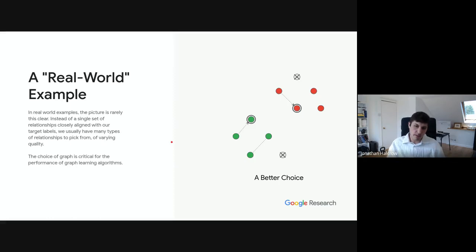A bad choice of graph gives us a poorly performing graph learning algorithm. On the other hand, a better choice might be to choose the dotted lines from the previous picture. And instead, we make these two decisions correctly, but we're unable to make any inferences about these other nodes. And so you can see the choice of graph is critical for the performance of any graph learning algorithm you try.